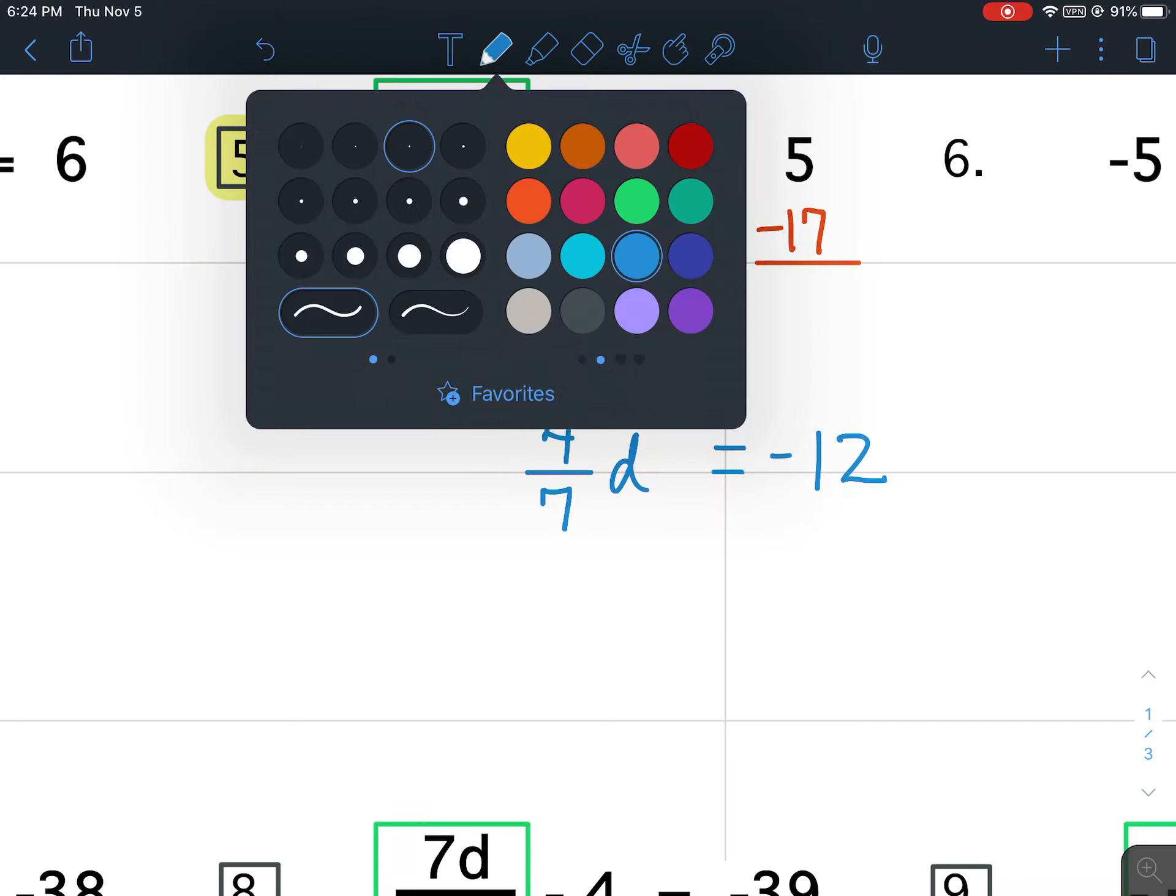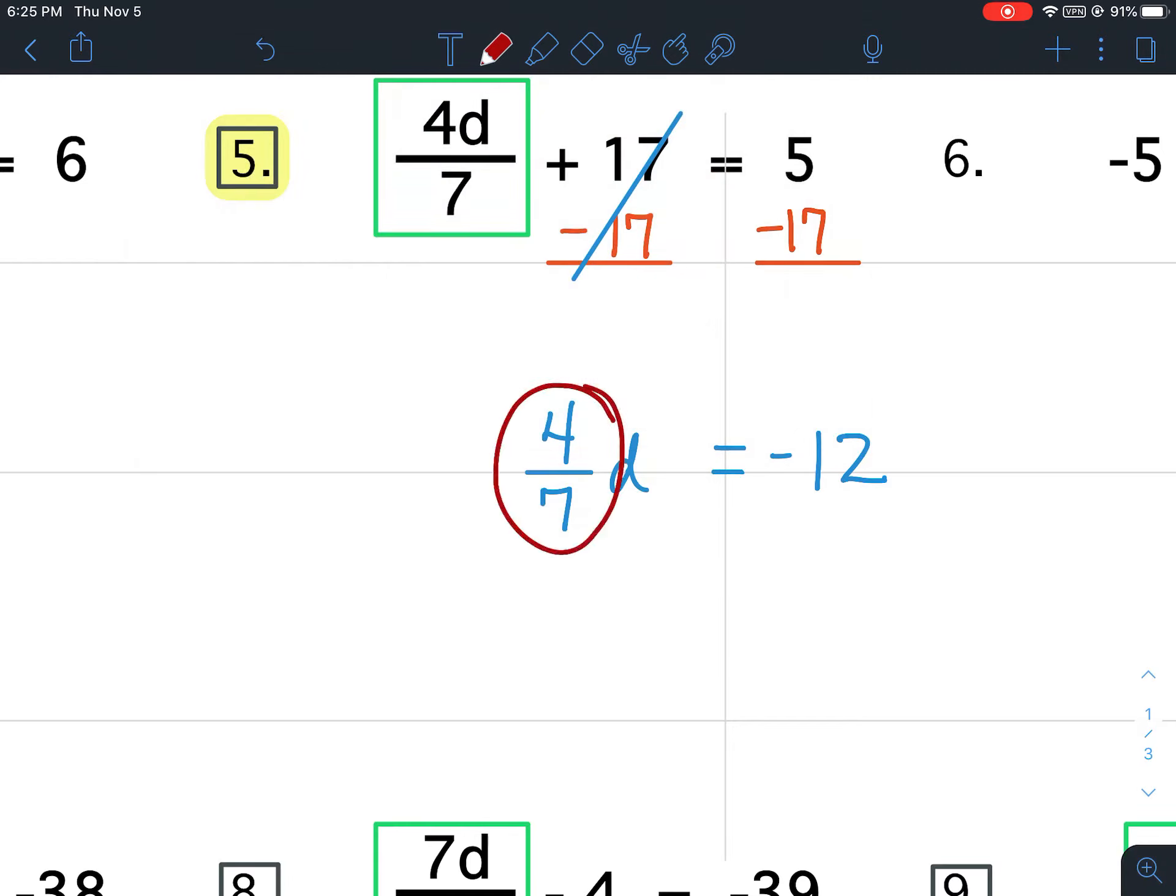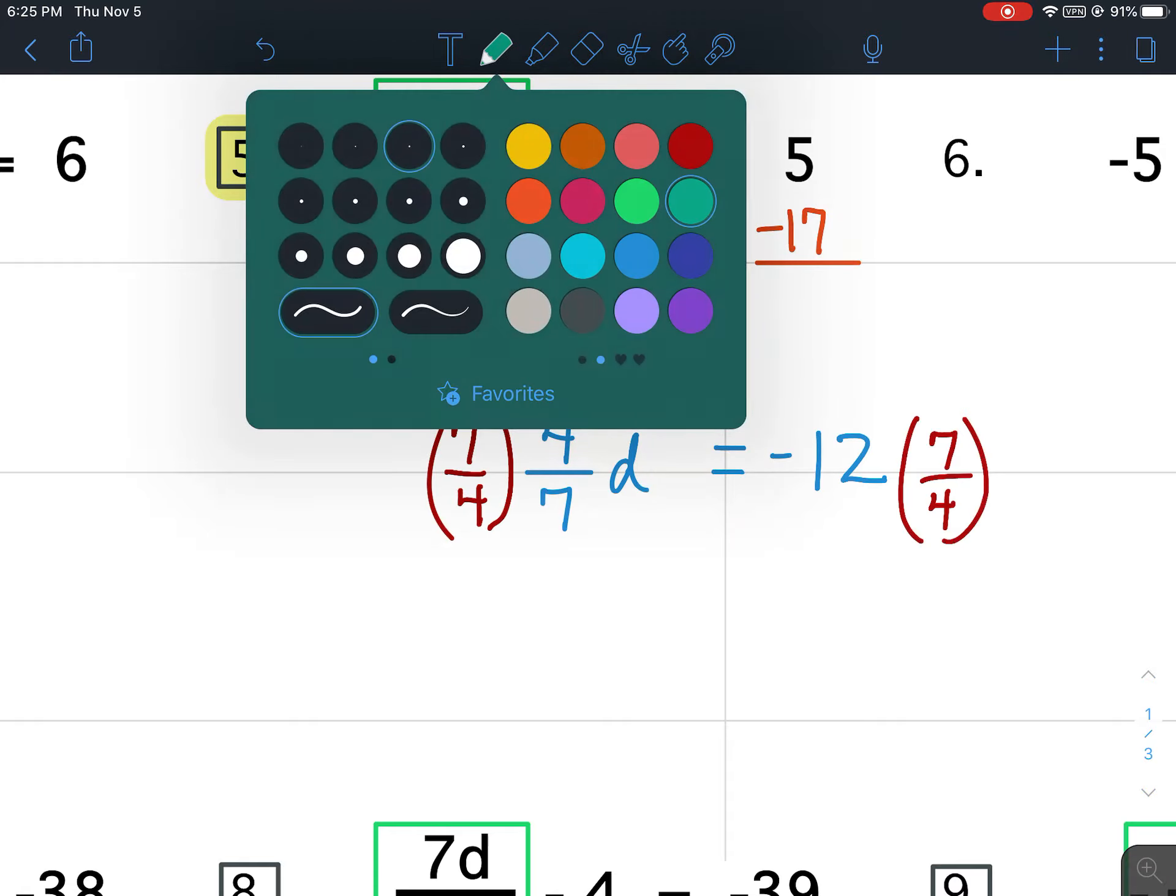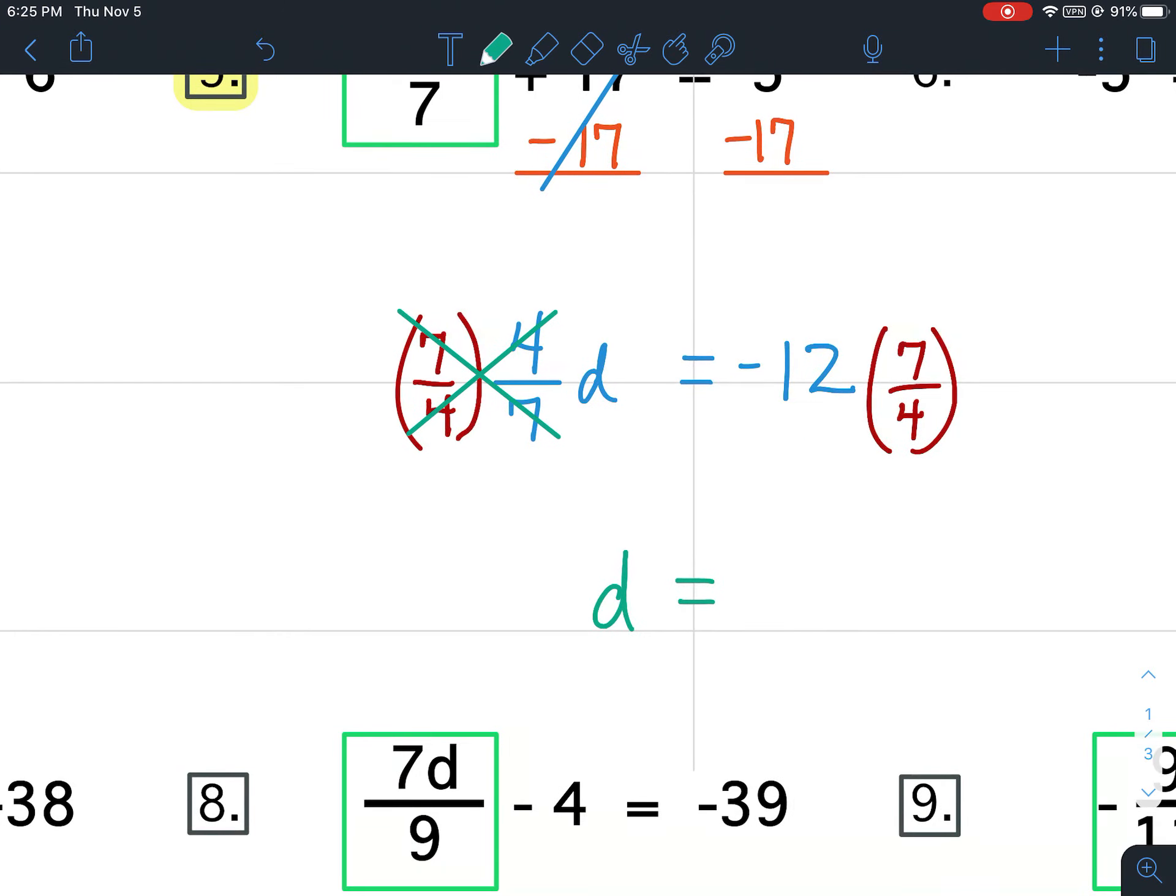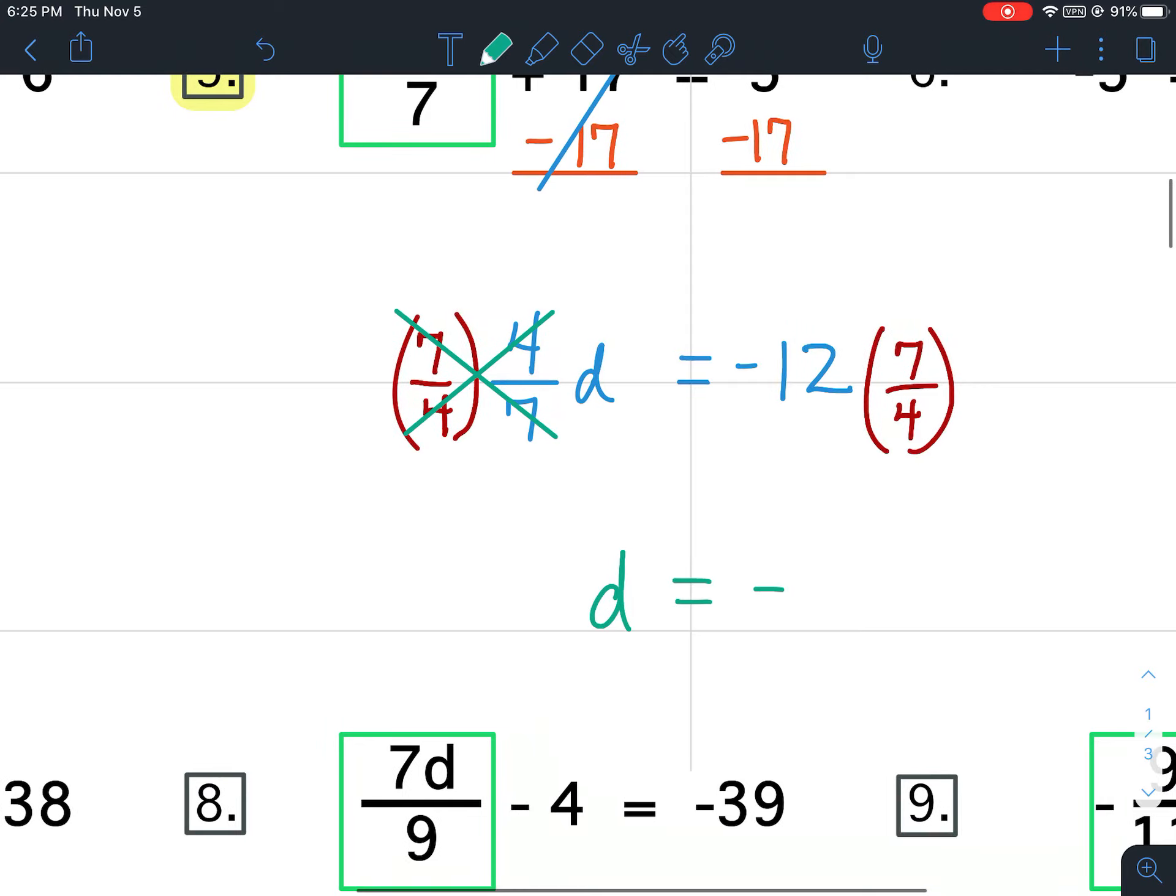This is a multiplication problem that contains a fraction. So, to get rid of the fraction, we take the reciprocal. We're going to multiply both sides by the reciprocal. So I'm going to multiply both sides by 7 4ths. The 4ths cancel, the 7ths cancel. So I'm going to have d equals, and then you would put in your calculator, negative 12 times 7 4ths. 4 goes into 12, 3 times 3 times 7 is 21. So this is going to be negative 21.